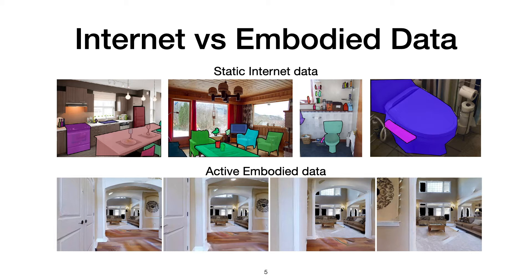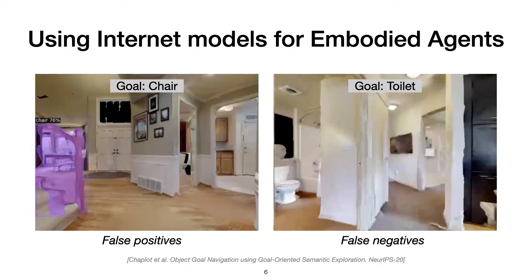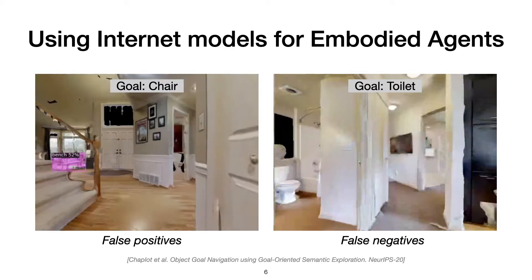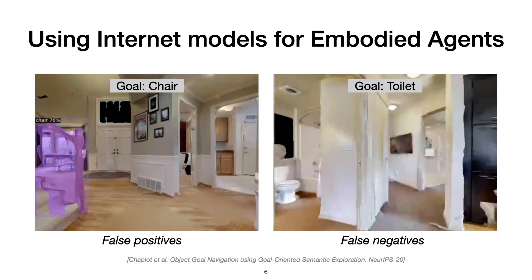Embodied data is not independent and is based on the underlying physical world. Unlike internet images, embodied images are not centered around objects and consist of many partially visible and occluded objects from strange viewpoints. Due to this mismatch in data distribution, perception models trained using internet data are not effective at embodied tasks. Here I'm showing examples of false positives and negatives when using a Mask R-CNN trained on internet data and used for object navigation.